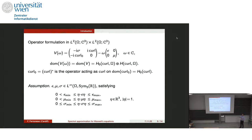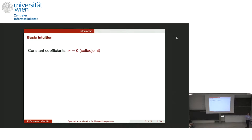Let me repeat briefly the assumptions on epsilon, mu, and sigma, as they are quite important. We want them to take values in the space of symmetric matrices, with specific bounds: epsilon and mu are strictly bounded from below with strictly positive constants, while sigma is allowed to be zero. So, the easiest possible case for computing the spectrum is when you have constant coefficients and sigma equals zero — the so-called self-adjoint case.